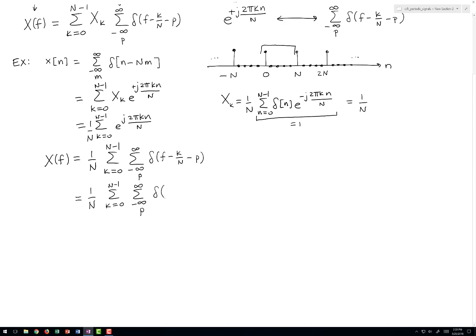And I'll rewrite the argument of this delta function as follows. I'll write this as k plus N times p, and that whole thing times 1 over N. If you examine that closely, you'll see that that's equivalent to the expression up above.